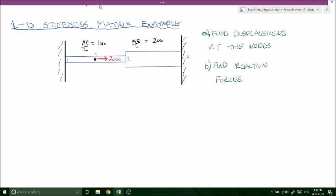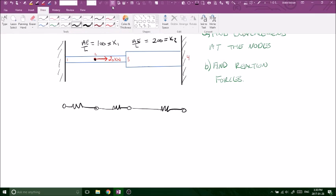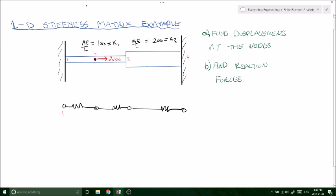So first of all what we want to do, we want to just draw our free body diagram of our springs. So with this type of example, even though we have only two Ks, K1 and K2, we still are going to have four different nodes. So we've got one node, two node, our third node, and our fourth node.